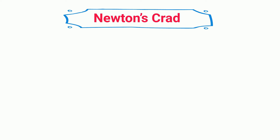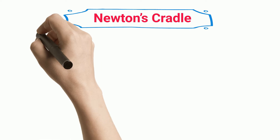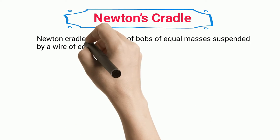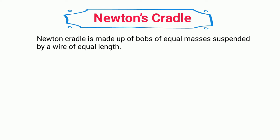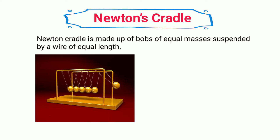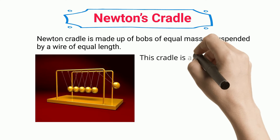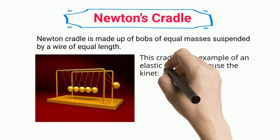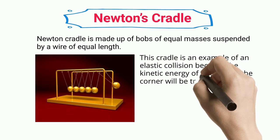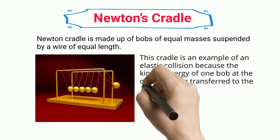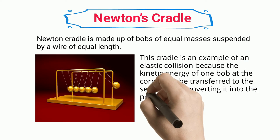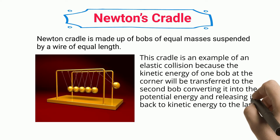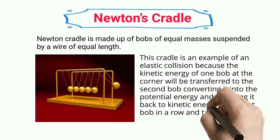Newton's Cradle. Newton's Cradle is made up of bobs of equal masses suspended by wires of equal length. This cradle is an example of an elastic collision because the kinetic energy of one bob at the corner will be transferred to the second bob, converting it into potential energy and releasing it back to kinetic energy to the last bob in a row, and the process continues.